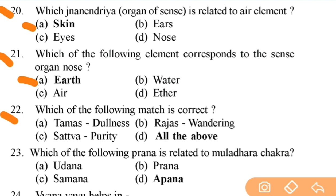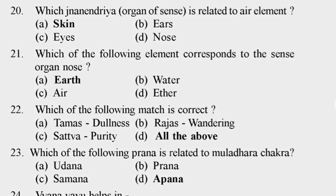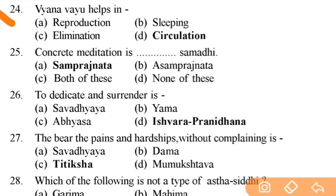Which of the following match is correct? Right answer is all of the above. Tamas — dullness; Rajas — wandering; Sattva — purity. Important question. Next: which of the following Prana is related to Muladhara chakra? Right answer is D — Apana. Next: Vyana Vayu helps in — right answer is D — blood circulation.